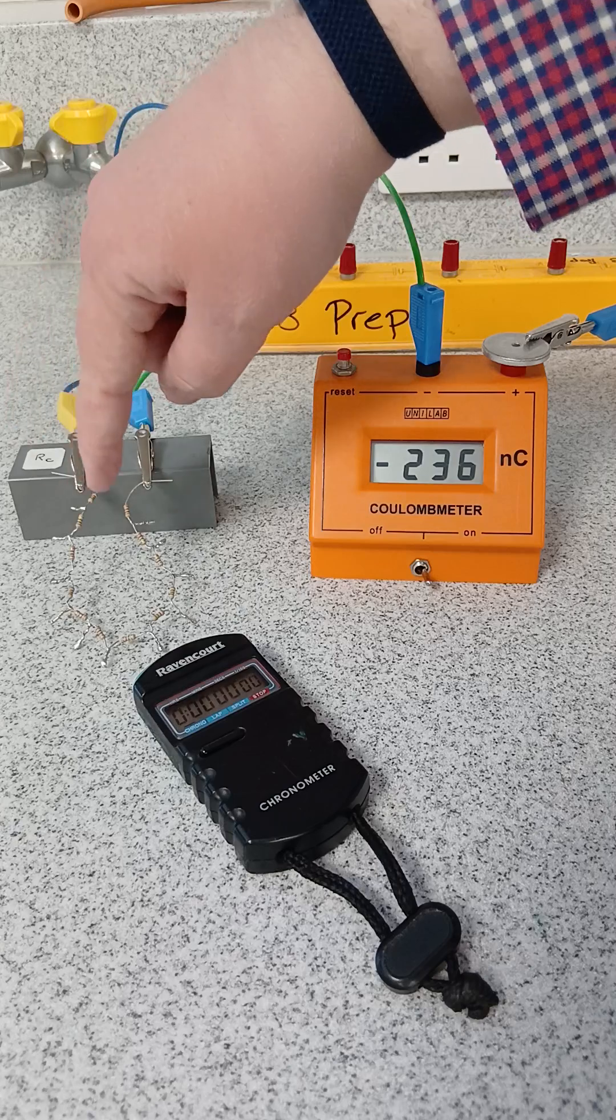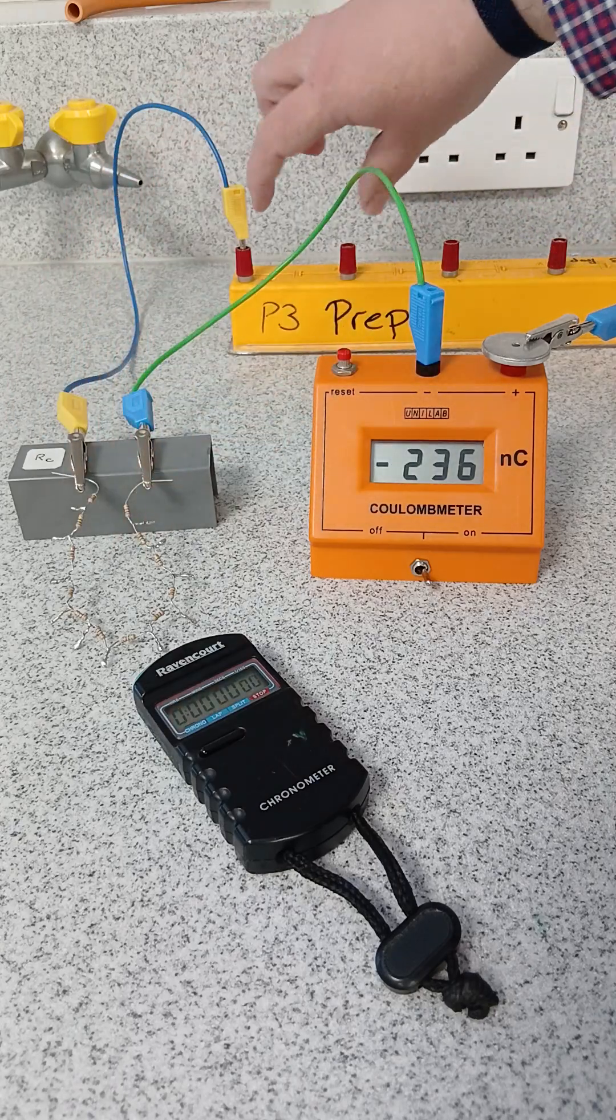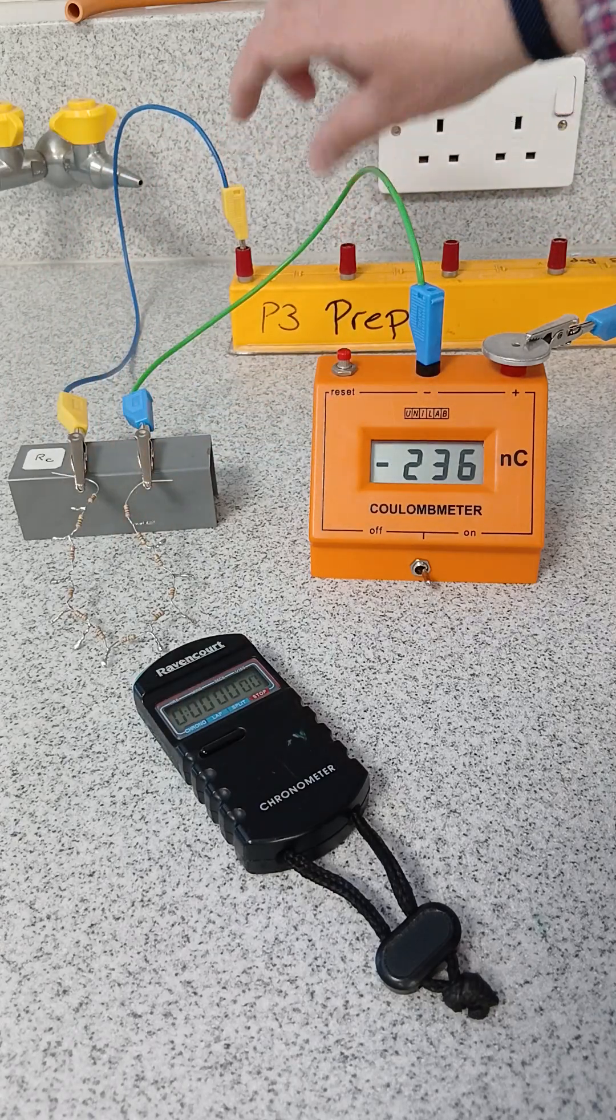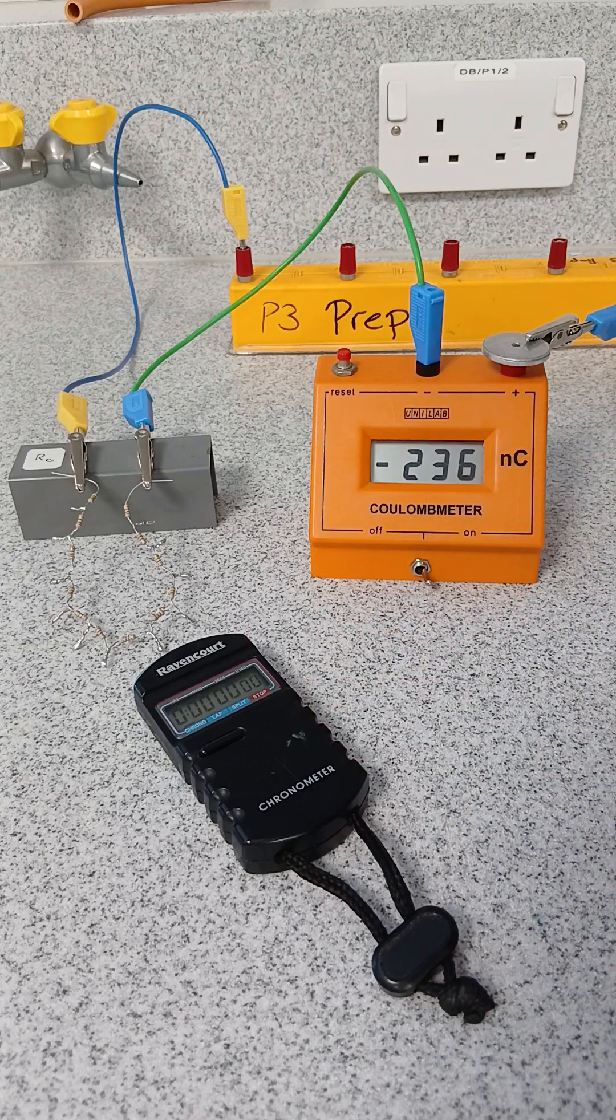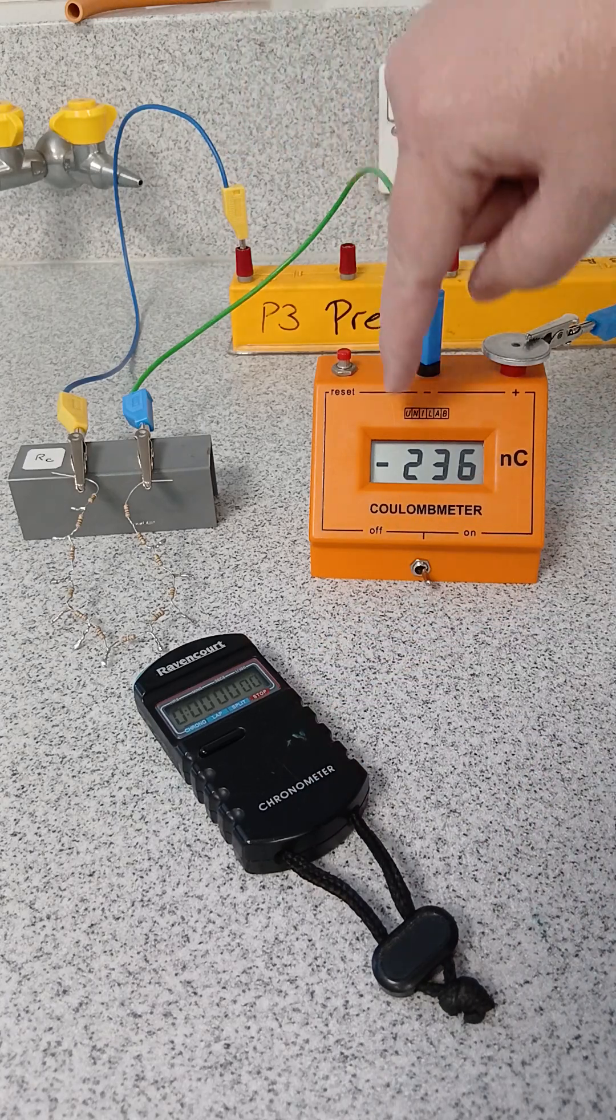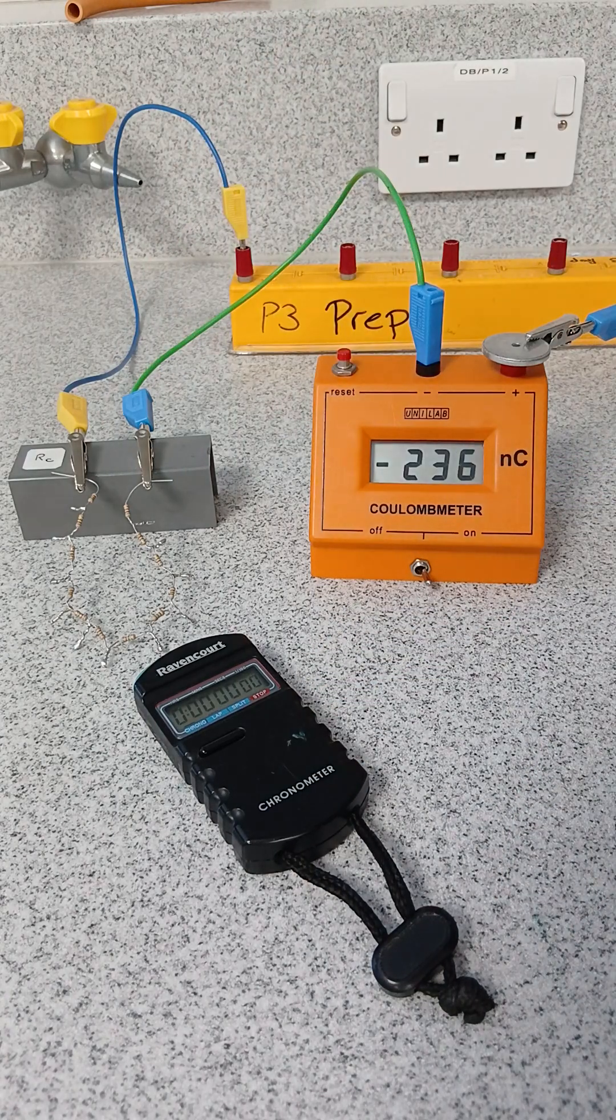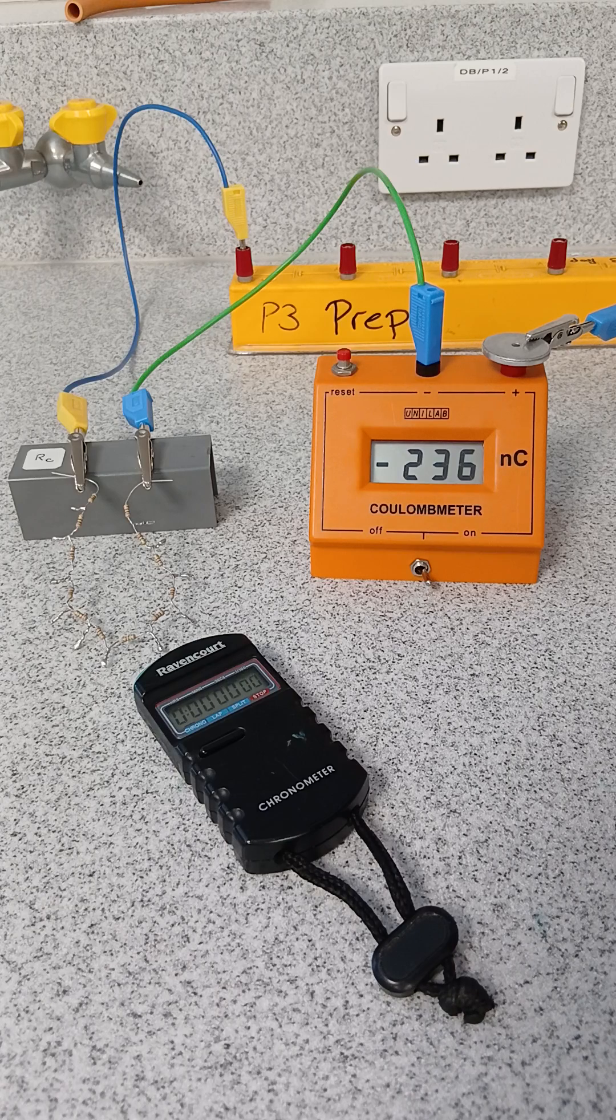And then you could also work out the resistance of these resistors, because that was one and a half volts, the voltage. You would have worked out the current now, Q over T. And you could do voltage divided by the current. And that will give you the resistance, hopefully in the order of 100 mega ohms.